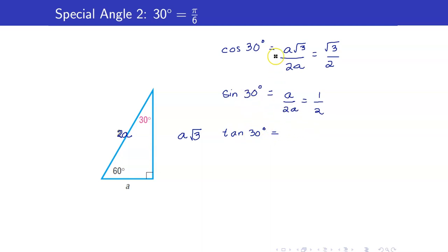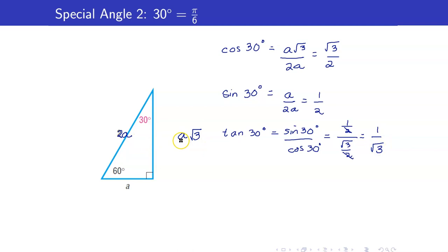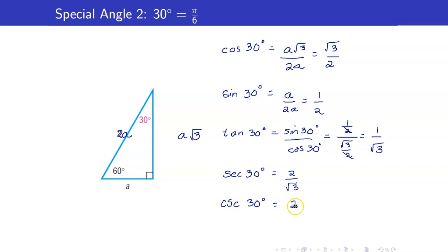Tangent of 30 degrees — using sine over cosine — is 1 half over square root of 3 over 2. The 2's cancel, giving 1 over square root of 3. You can also verify this from the right triangle: opposite is a, adjacent is a square root of 3, so a over a square root of 3 also gives 1 over square root of 3. The rest are just the reciprocals: secant of 30 is 2 over square root of 3, cosecant of 30 is 2, and cotangent of 30 is square root of 3.